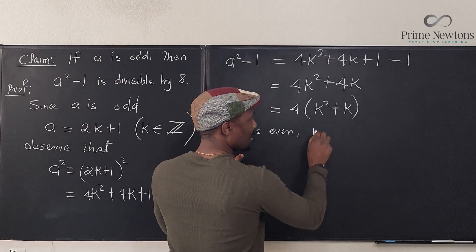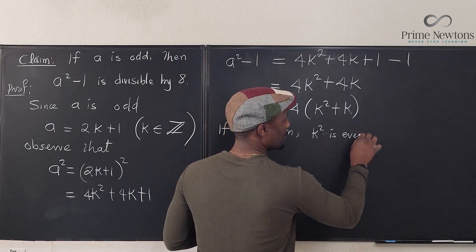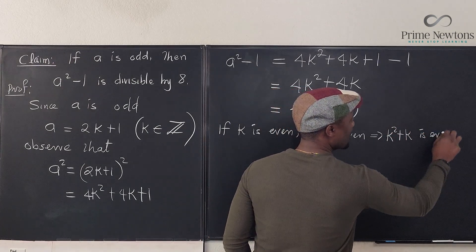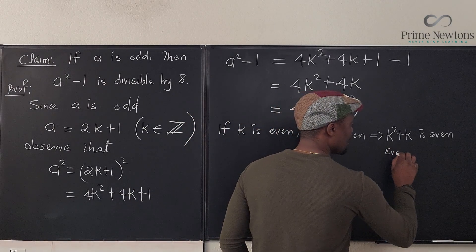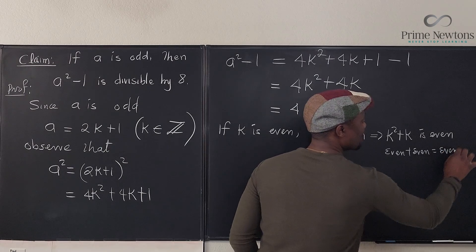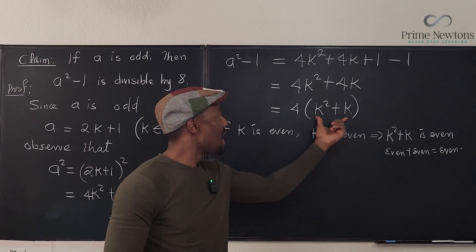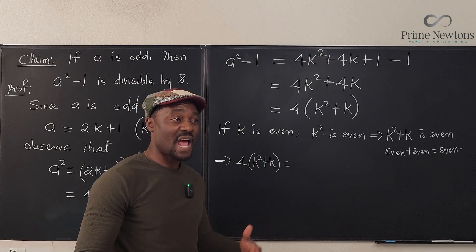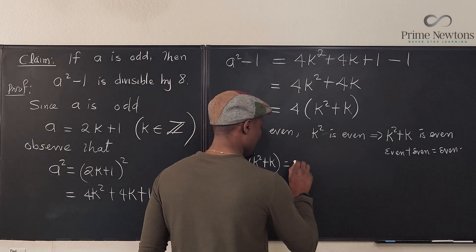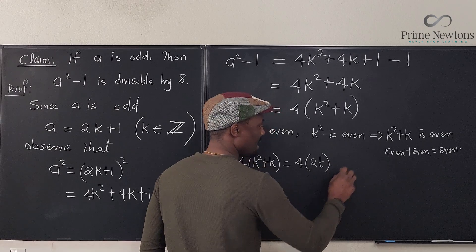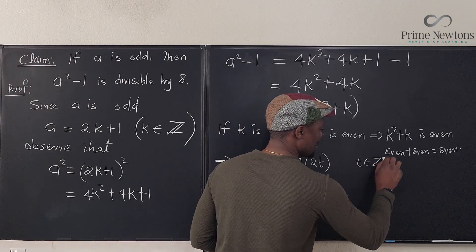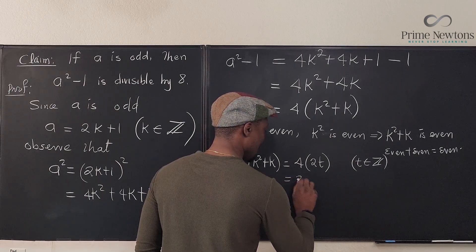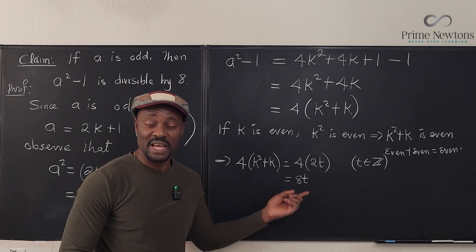So if k is even, then k² is even, which implies that k² + k is even. The sum of two even numbers is always even. So it's even plus even equals even. So that means the number in this parenthesis is an even number and we can represent it as 2t, where t is any integer. Which implies 4(k² + k) = 4(2t), which is equal to 8t. And 8t is obviously divisible by 8. As long as you can write it as a multiple of 8, it is divisible by 8.